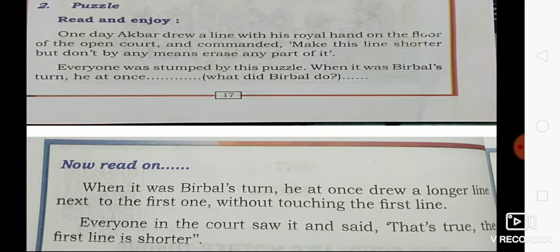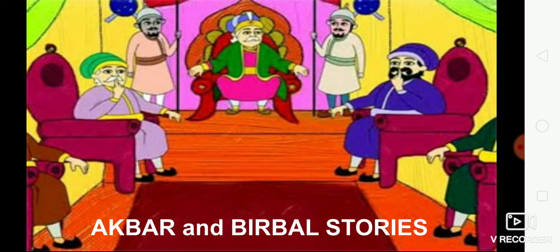When it was Birbal's turn, he at once drew a longer line next to the first one without touching the first line. Everyone in the court saw it and said, 'That's true, the first line is shorter.' Birbal was a clever minister in Akbar's court, and he passed this test by drawing another line longer than the one drawn by the king.